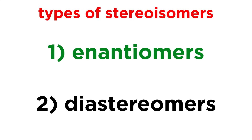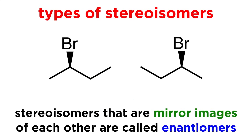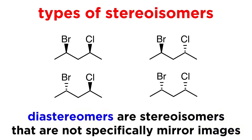In terms of subcategories of stereoisomers, we have enantiomers and diastereomers. Enantiomers are stereoisomers that are specifically mirror images of one another — reflect one across a mirror plane and you get the other enantiomer.